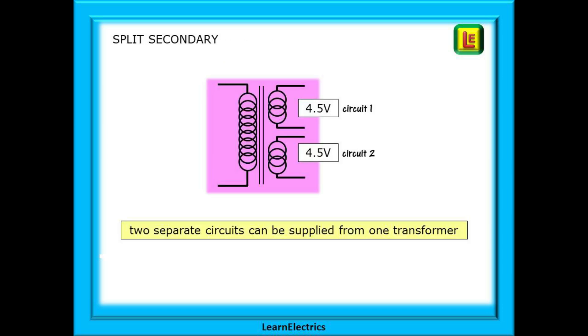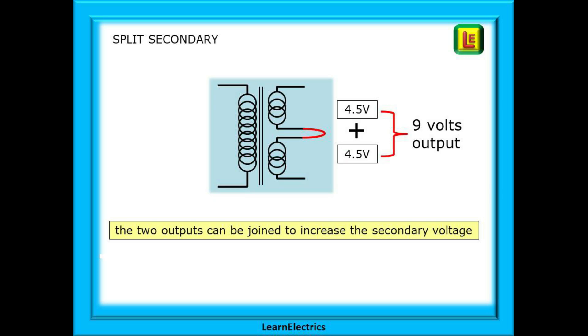Some transformers have split windings and you may come across these in your work. In this drawing we have two secondary windings each giving four and a half volts. This means that two separate circuits can be supplied from the same transformer or we can join the two secondary windings as shown and have a 9 volt output.